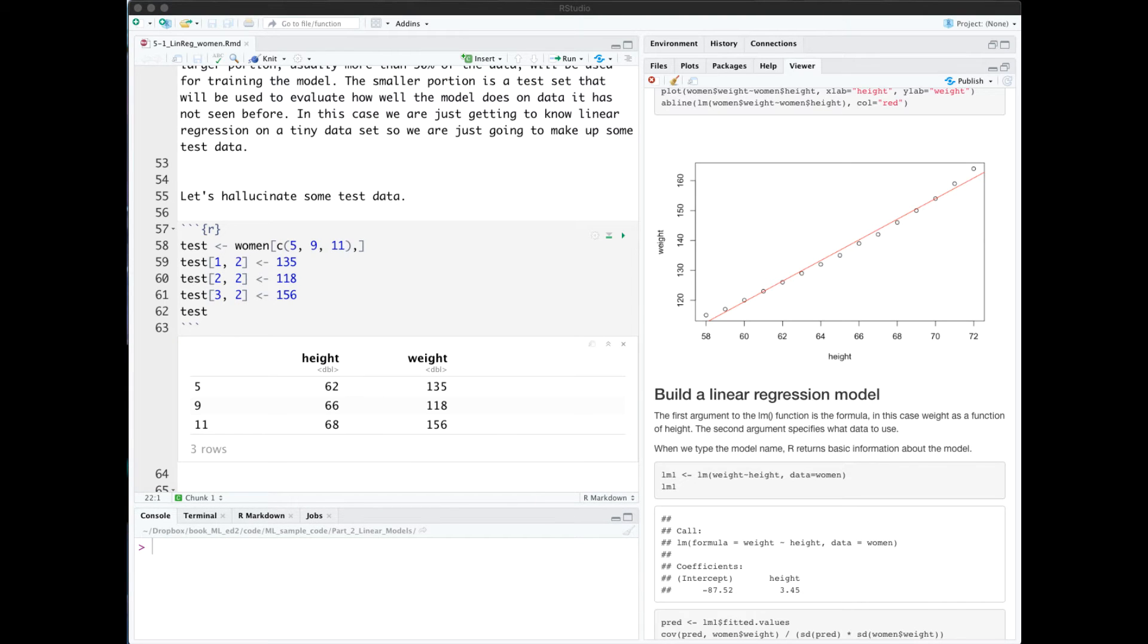Normally we divide our data into train and test sets. We run the algorithm on the training data and don't let it see the test data until evaluation. But since this is such a tiny data set, I'm just going to make up some test data for illustration purposes.